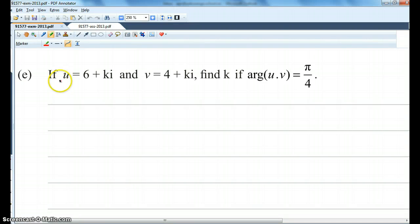Okay, if u equals this and v equals that, find k, this is k business here, if the argument of u times v is pi upon 4.